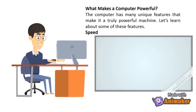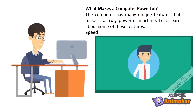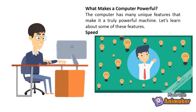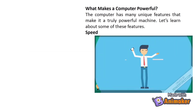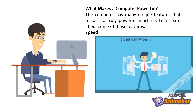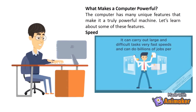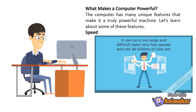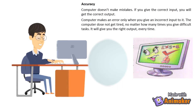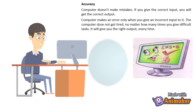What makes a computer powerful? The computer has many unique features that make it a truly powerful machine. Speed: it can carry out large and difficult tasks at very fast speeds and can do billions of jobs per second. Accuracy: a computer doesn't make mistakes. If you give the correct input, you will get the correct output. A computer makes an error only when you give it incorrect input.